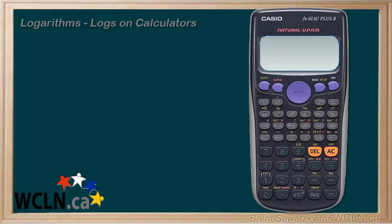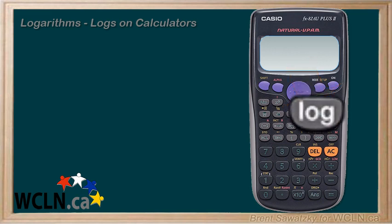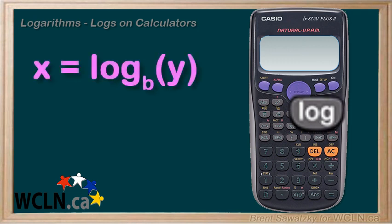So now that we have a feel for what logs are about, let's take a look at that log button on your calculator. Typically all it says is log, but we know that in order to do a logarithm, or an inverse exponent, we need to know the base and the result of the exponent. There must be some assumption being made with this button here, isn't there?